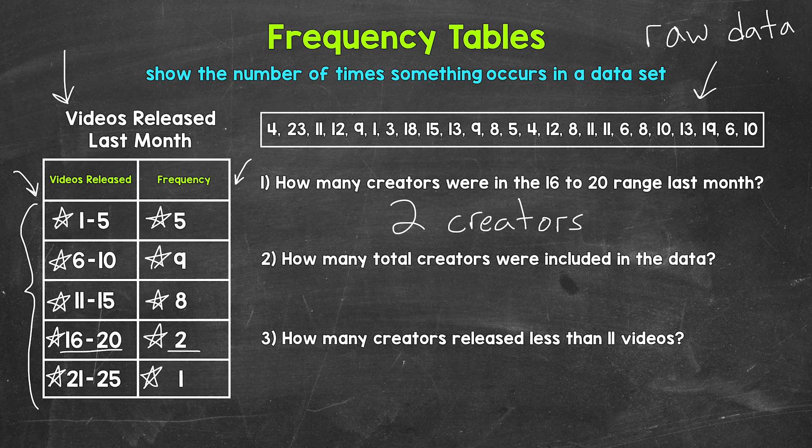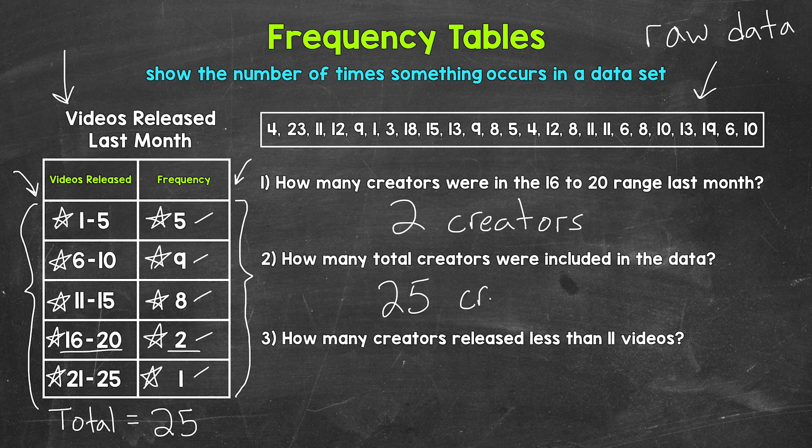Let's move on to number 2, where we have how many total creators were included in the data. Well, for this, we need to take a look at the frequency column and add all of those numbers up. So we have 5 creators, 9 creators, 8 creators, 2 creators, and 1 creator. So if we add those up, that's going to give us the total amount of creators. Well, 5 plus 9 is 14, plus 8 is 22, plus 2 is 24, plus 1 gives us 25. So 25 total creators.